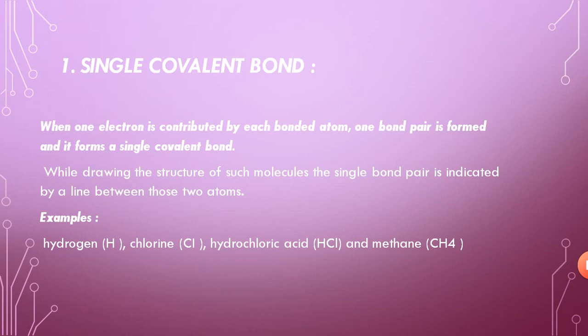Both atoms contribute a single electron that is shared between them, making a bond represented by a single line, called the single covalent bond. Examples include the hydrogen molecule (H₂), which forms a single covalent bond, as does chlorine, hydrochloric acid (HCl), and methane (CH₄).